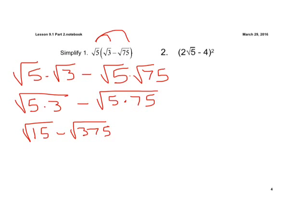Keep in mind, we're trying to simplify these. We want to try to get like radicals. We have a square root of 15 and a square root of 375. Let's try to rewrite this so we can have a radical 15 on the right side — we want a radicand of 15 underneath there. So let's think: can we rewrite 375 as 15 times some number?